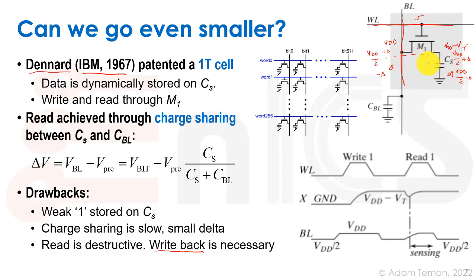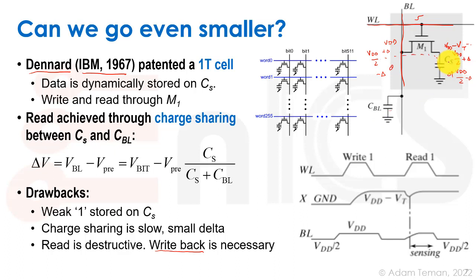In practice on DIMMs, the cell is read out and stored in a row buffer. When a different row is opened, a pre-charge operation writes back the data from the row buffer to the cell. The delta voltage is given by: δV = (V_bit − V_precharge) × CS / (CS + CBL). To make δV substantial, CS must be large relative to CBL, requiring special fabs to make very large capacitors.